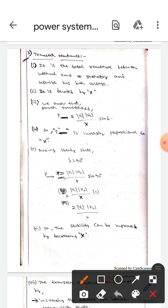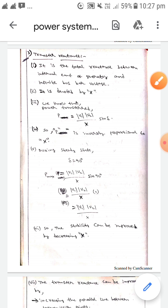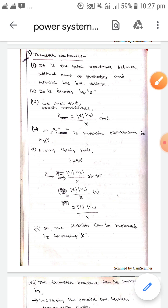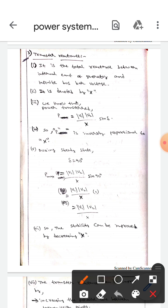If you observe here, P is inversely proportional to X. During steady state condition, delta equals 90 degrees. We already discussed about this in the previous video.